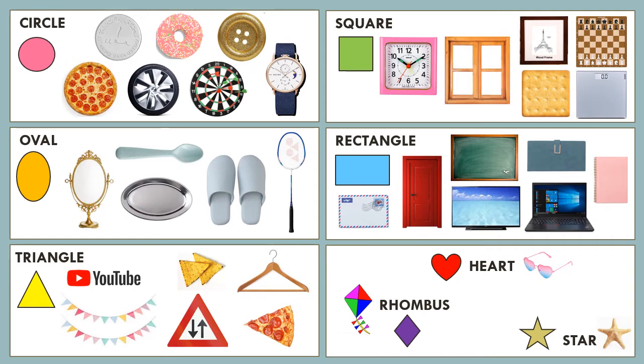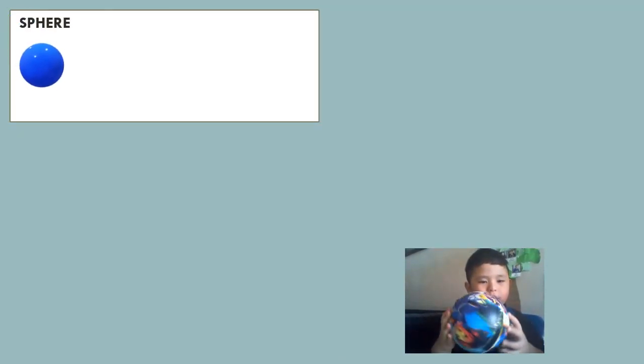Now let's check out the solid shapes. The first 3D shape that I have here is the sphere. The sphere goes round and round like a circle.